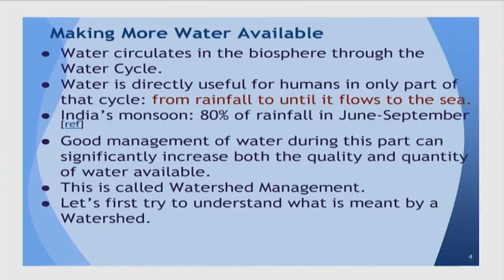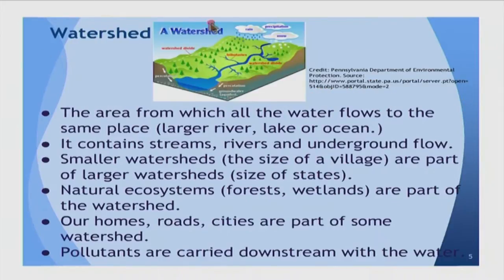You have all the rain that simply flows over the surface and reaches the ocean, and then the rest of the year you are left with none. So it is of great importance to ensure that the water remains available for the rest of the year. That can be done by what is known as watershed management. Let us first try to understand what a watershed is.